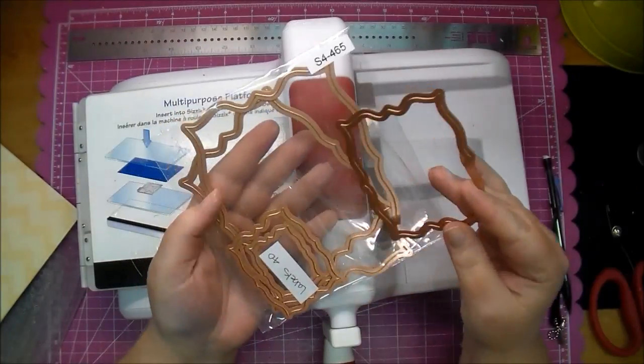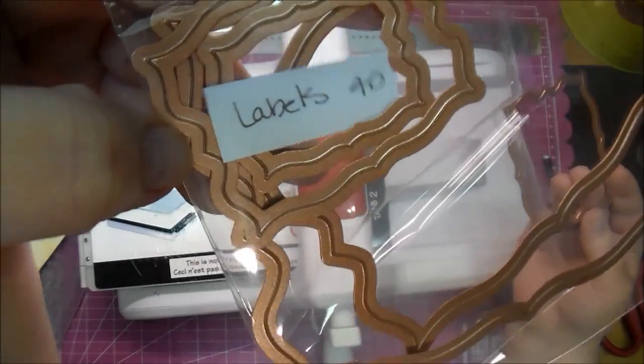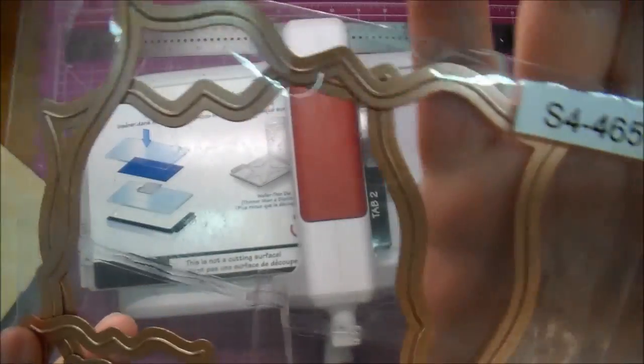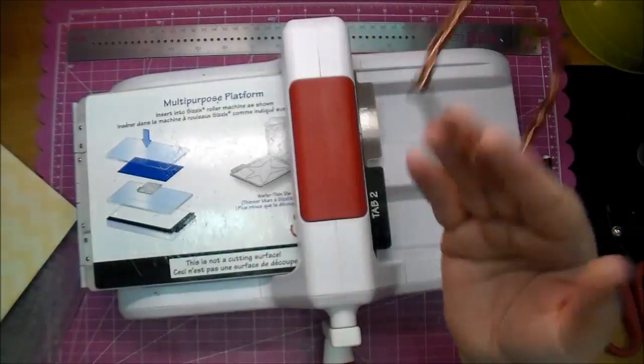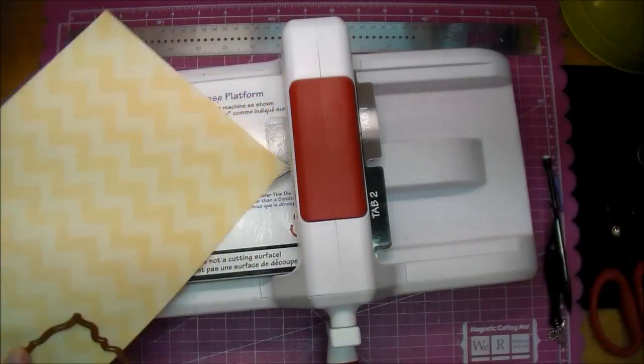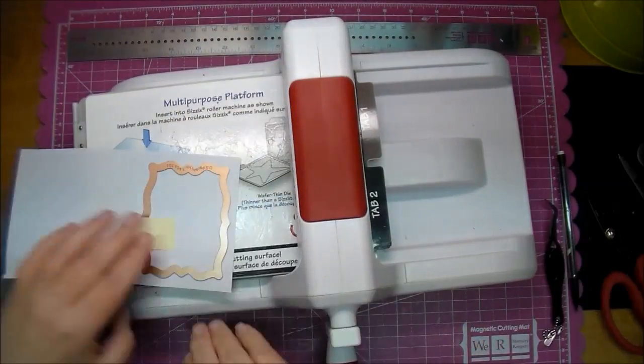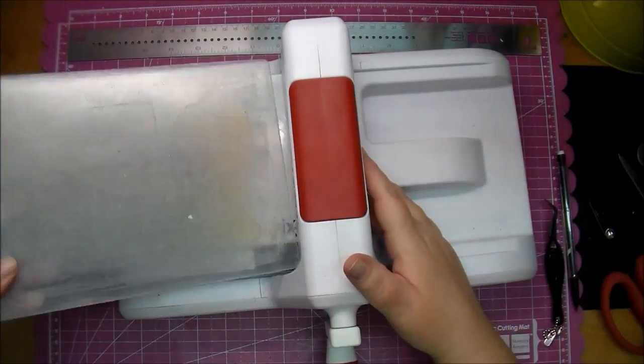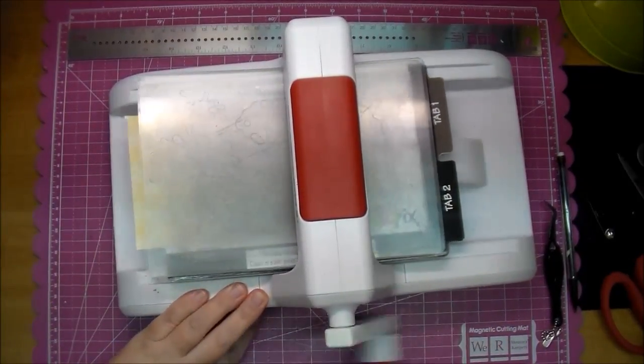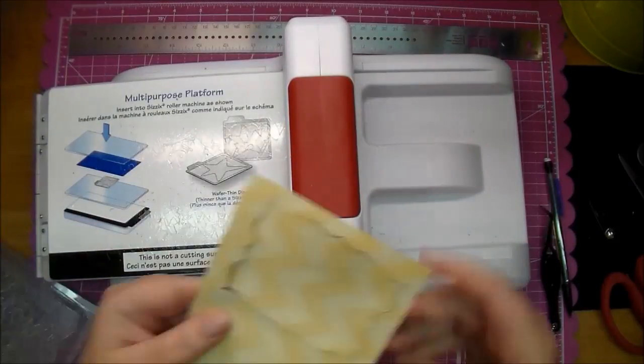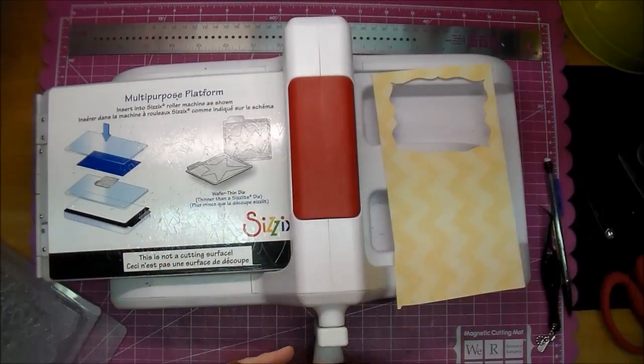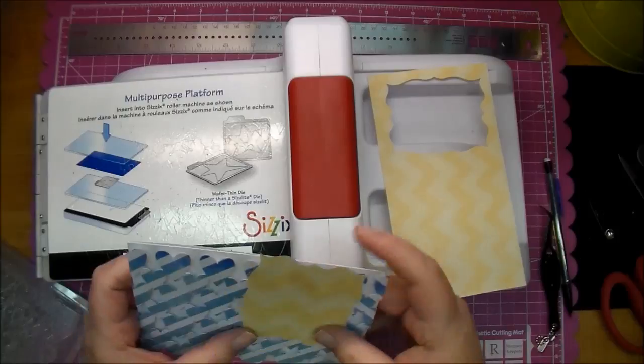Now I'm using a Labels 40 die from Cut at Home as well. This is a fun die. This is S4465 which will be in the description box. Again using that same paper, I'm cutting out one of these from that paper, but that paper is very thin. So off camera I will cut out a white piece of cardstock from the same die and adhere them together to give it a little bit more stability.